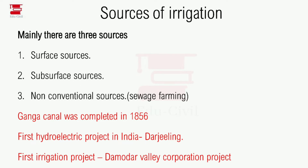In the sources of irrigation, there are 3 sources generally: surface source, subsurface source, and non-conventional sources. Non-conventional sources relate to environmental engineering topics such as sewage farming and sewage use for irrigation purposes.